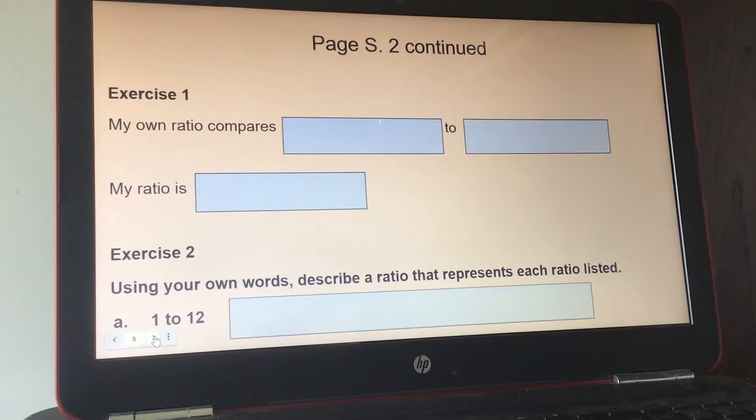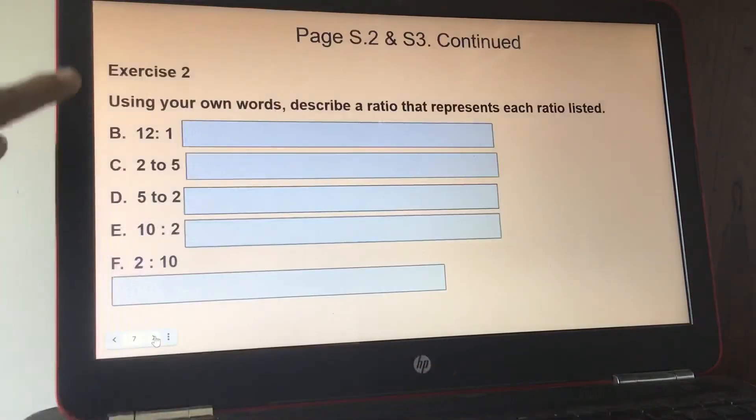Exercise 2, using your own words, describe a ratio that represents each ratio listed. So they start off 1 to 12. So you might say, this is an example, one of the students said, and I thought it was cute, one cat lady to 12 cats. So you go ahead and finish through F.